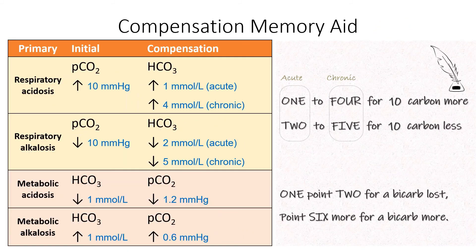It's difficult to try to remember the compensation formulas, so here is a memory aid. For respiratory conditions: 1 to 4 for 10 carbon more, and 2 to 5 for 10 carbon less — reflecting the changes in bicarbonate in acute or chronic respiratory conditions. For metabolic disorders: 1.2 for one bicarb lost, and 0.6 more for a bicarb more — reflecting the changes in pCO2 for each change in bicarbonate.